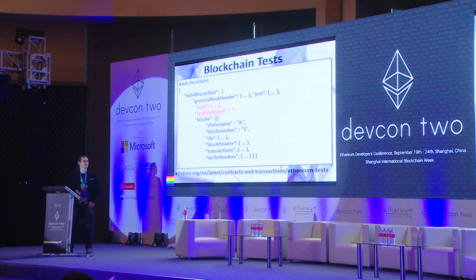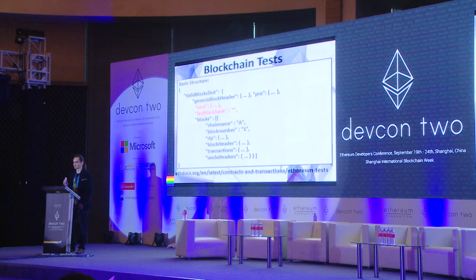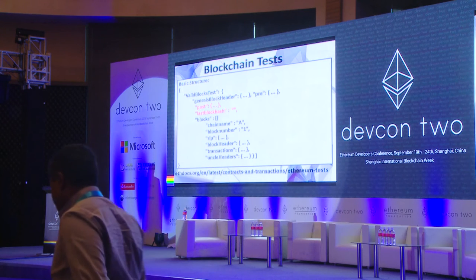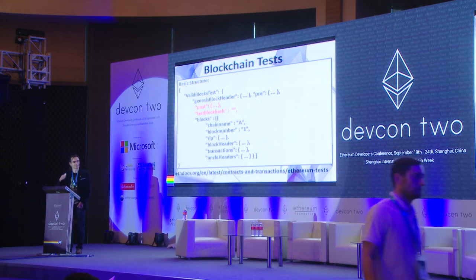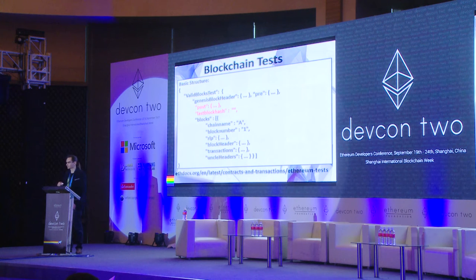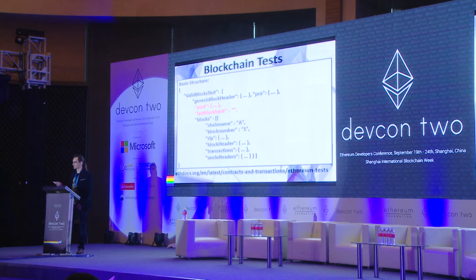Blockchain tests are basically like state tests, but in this test you have not a single transaction but a series of blocks. Each block could have different transactions, and some blocks might be invalid. Each client should read such tests from a JSON file and try to import them into its own blockchain. As a result, it also gets a post state and last block hash — these are the important values that clients check against the ones described in the tests.